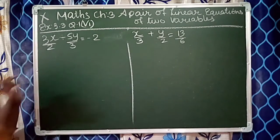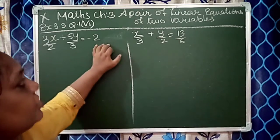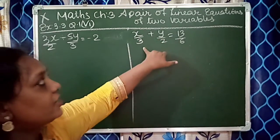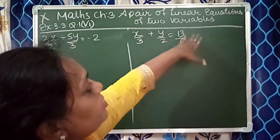3x upon 2 minus 5y upon 3 is equal to minus 2. Second equation: x upon 3 plus y upon 2 is equal to 13 upon 6.